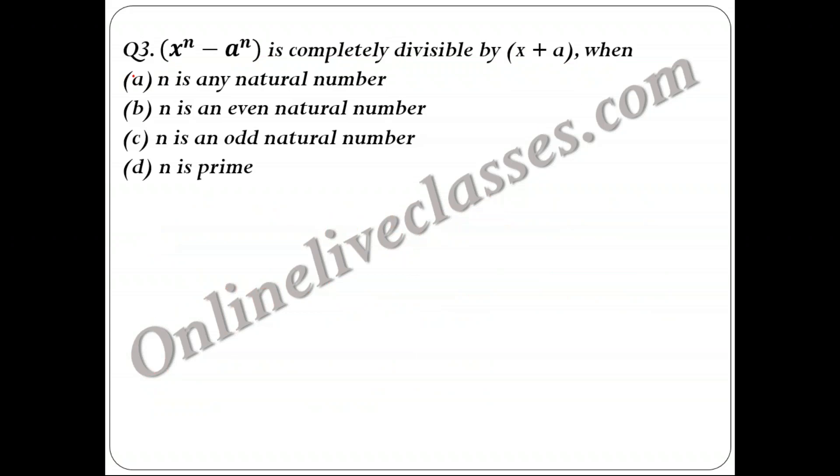Moving on to the next question: x^n - a^n is completely divisible by x + a. We know that a² - b² is divisible by a - b and a + b. So from here we get the property that if n is even, then only it will be divisible by x + a. Hence my answer becomes option B: n is an even natural number.